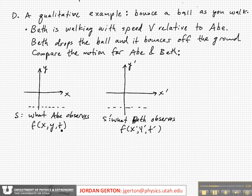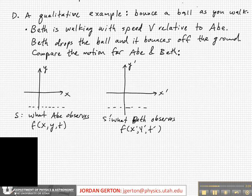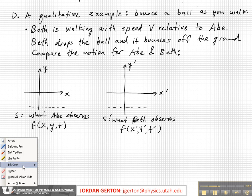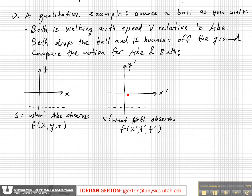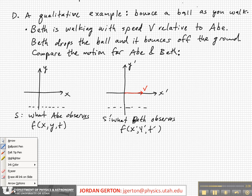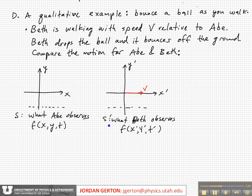So for Beth, she's moving with speed V relative to S. Her reference system is walking with speed V. And when she drops the ball, to her it looks like it just goes down, bounces, and comes back up.